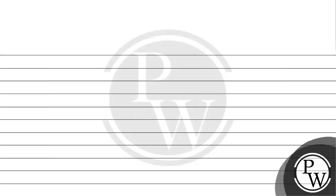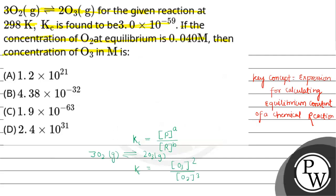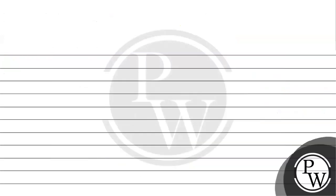The value of Kc is given as 3 × 10⁻⁵⁹, which equals concentration of O₃ to the power 2 divided by concentration of O₂ to the power 3. The concentration of O₂ is given as 0.040, so we substitute 0.040 to the power 3 in the denominator.